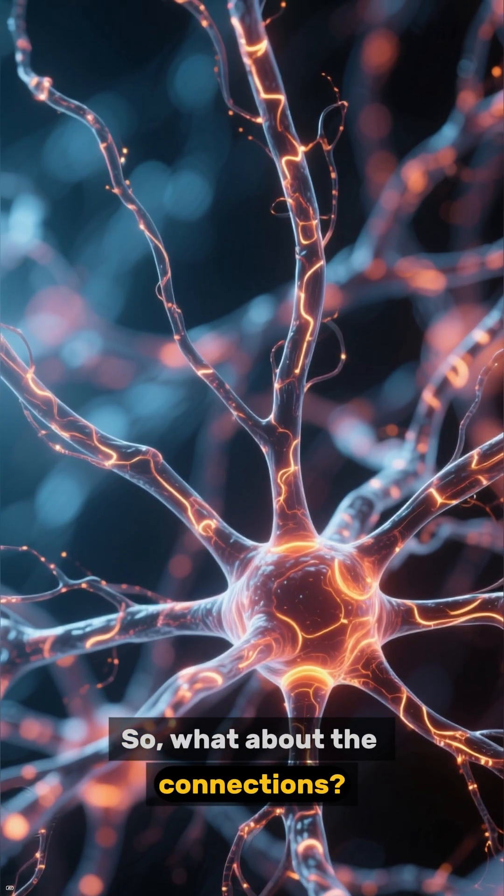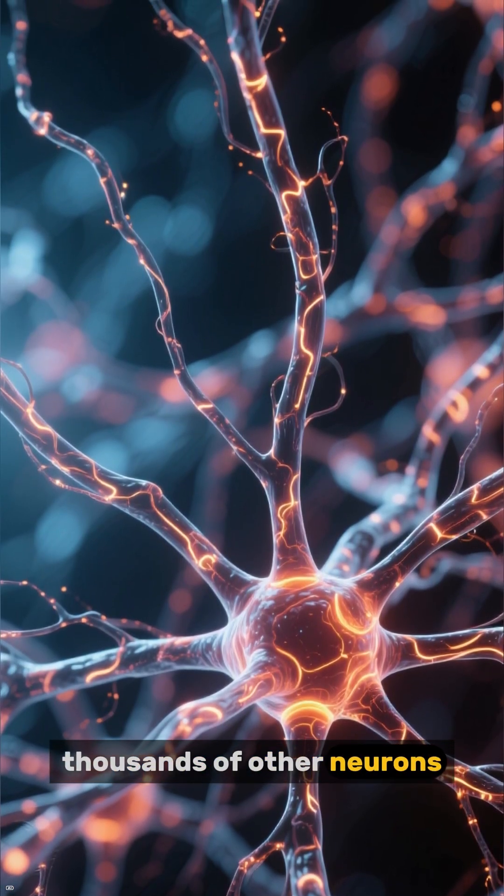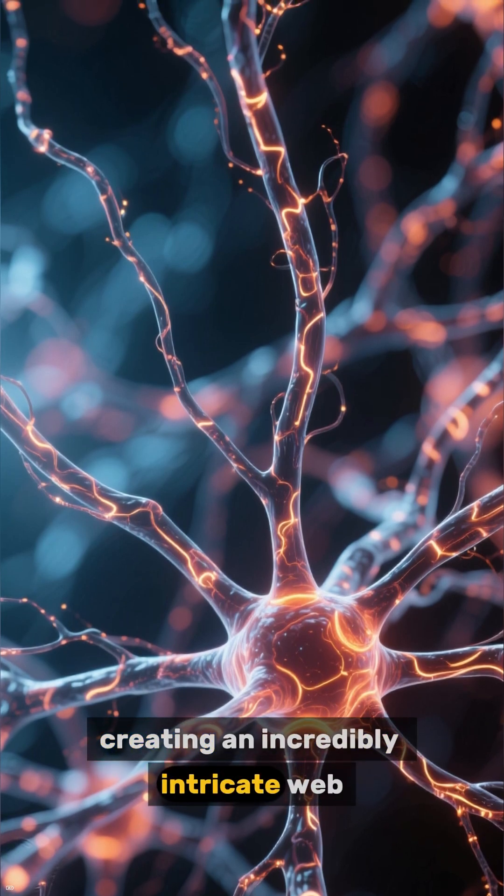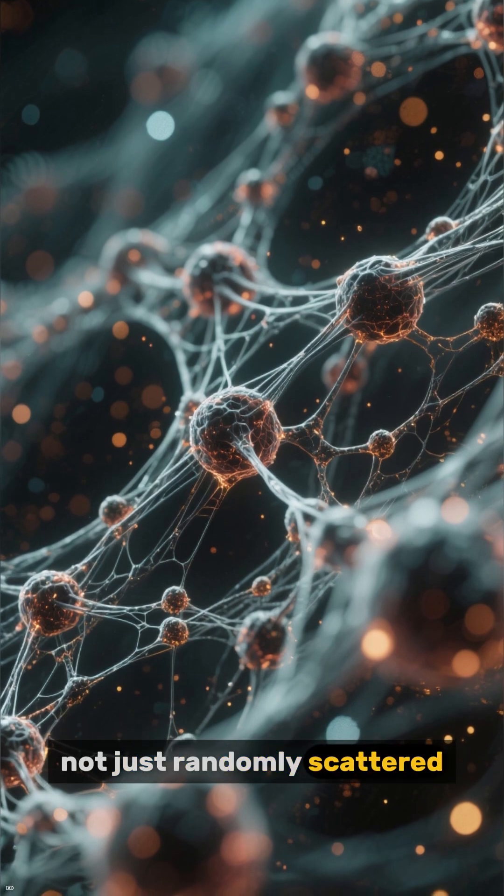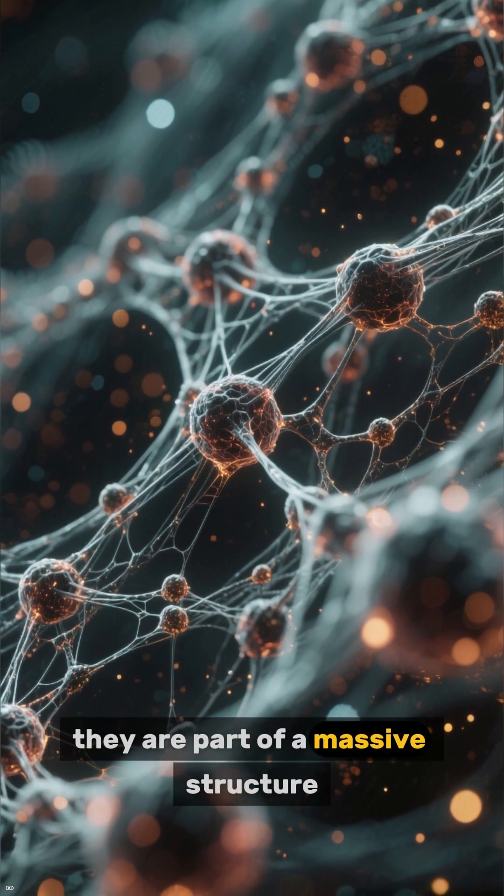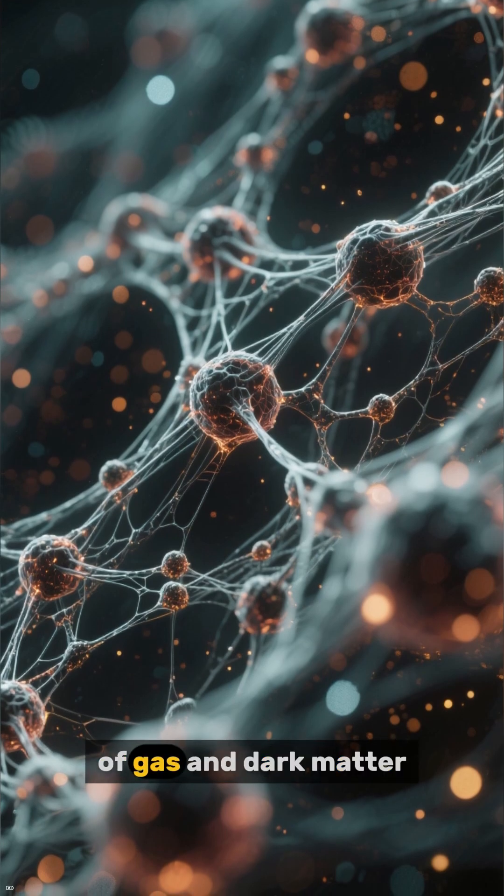So what about the connections? The average neuron connects to thousands of other neurons, creating an incredibly intricate web. Similarly, galaxies in the cosmic web are not just randomly scattered. They are part of a massive structure, clustered together and linked by filaments of gas and dark matter.